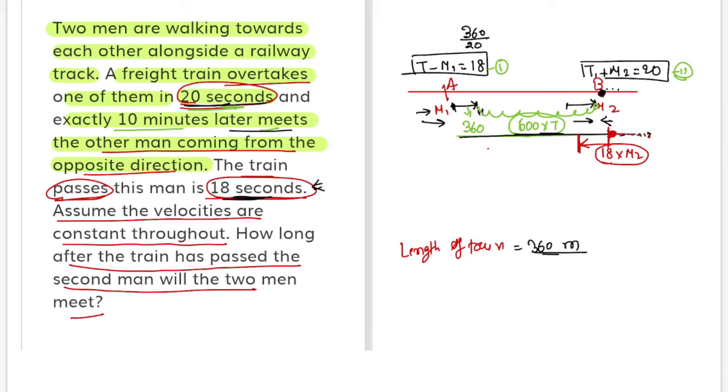The total distance between A and B is 600T plus 360. Now this distance is 18 into M2.